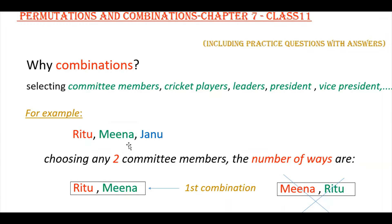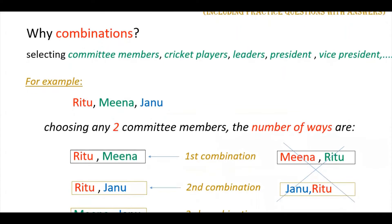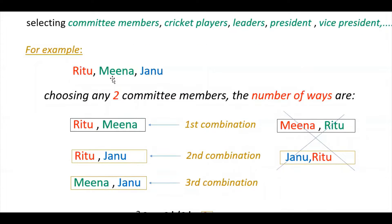If you see this example, you will understand. If there are 3 girls — Ritu, Meena, and Janu — and out of these 3 girls you have to select any 2 as committee members, the number of ways are: either Ritu-Meena, Ritu-Janu, or Meena-Janu. So you can select like this — there are 3 combinations. Once you select Ritu-Meena, you should not select Meena-Ritu again as a separate combination. So there are only 3 combinations here.